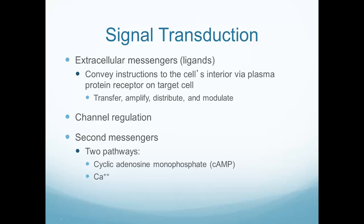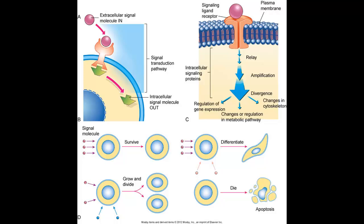We move signals from cell to cell using extracellular messengers called ligands, channel regulation, and second messengers. An extracellular signal molecule attaches to a receptor site on the plasma membrane, causing an intracellular signal to occur inside the cell. That extracellular signal molecule doesn't get moved inside the cell itself — it signals from outside, and inside the cell there's a separate signal molecule that carries out whatever function is needed.